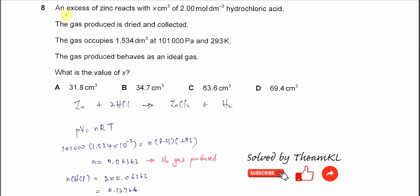Question 8. An excess zinc reacts with X cm³ of 2 mol per dm³ HCl. The gas produced is dry and collected. The gas occupies 1.534 dm³ at 101,000 Pascal and 293 Kelvin.